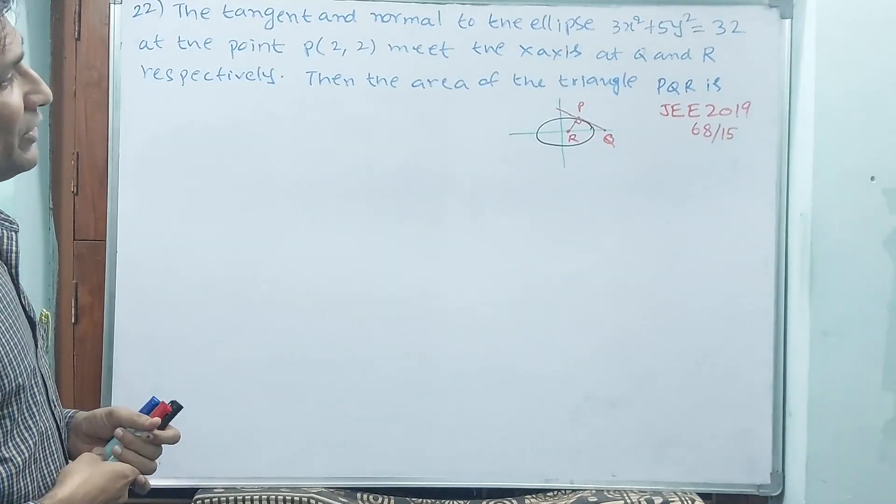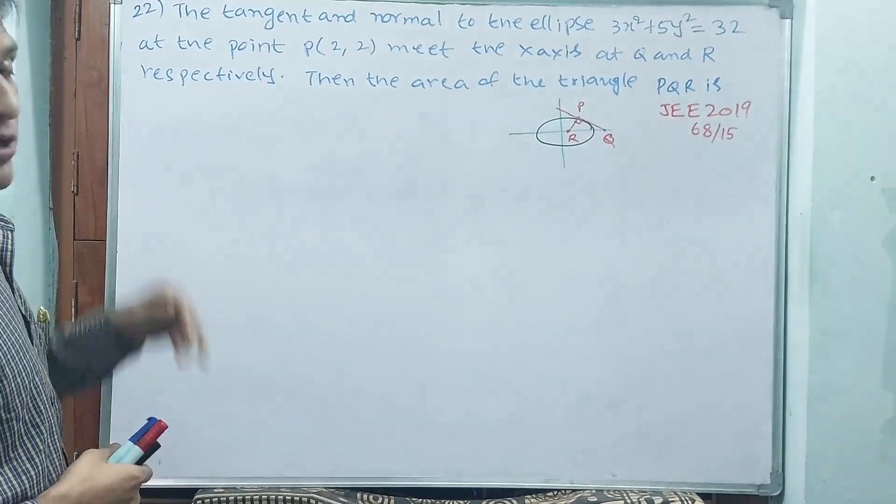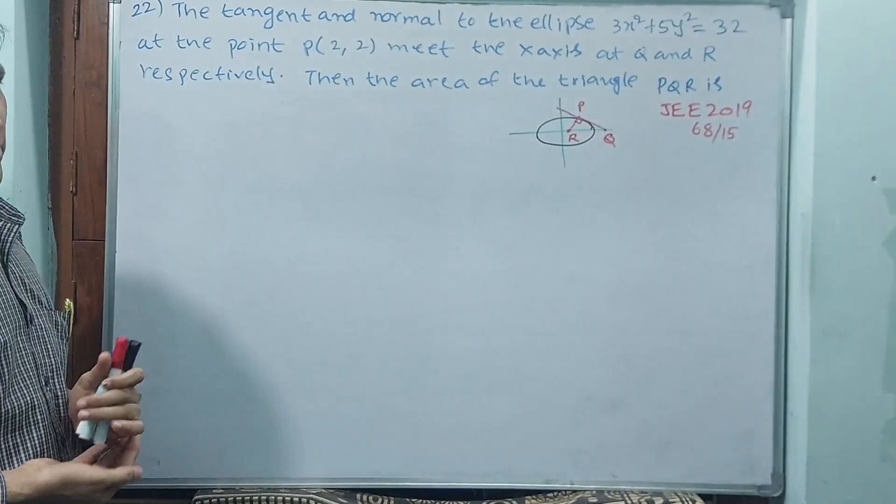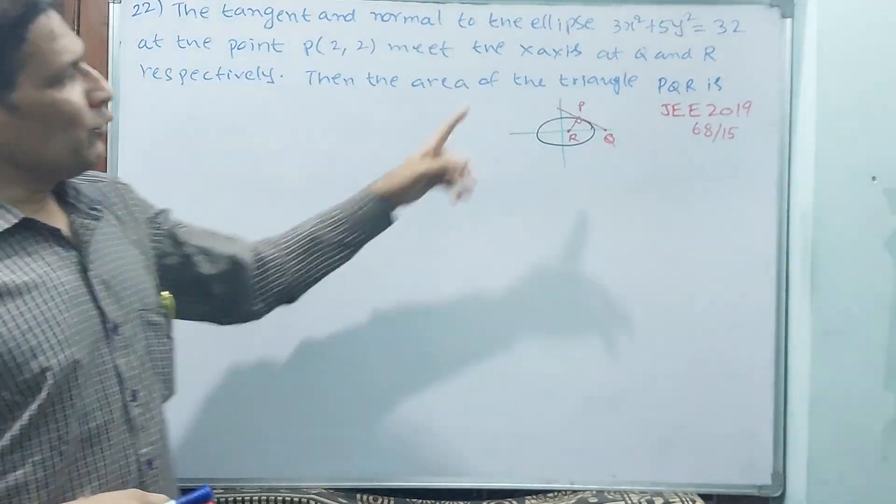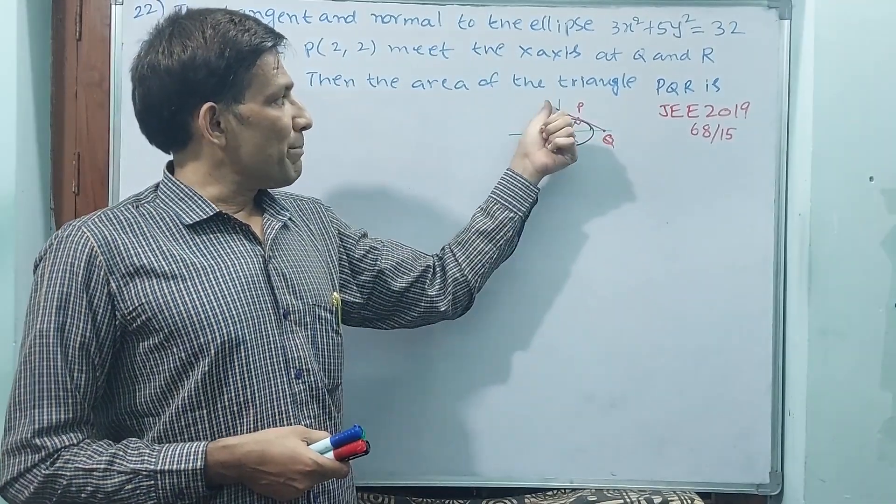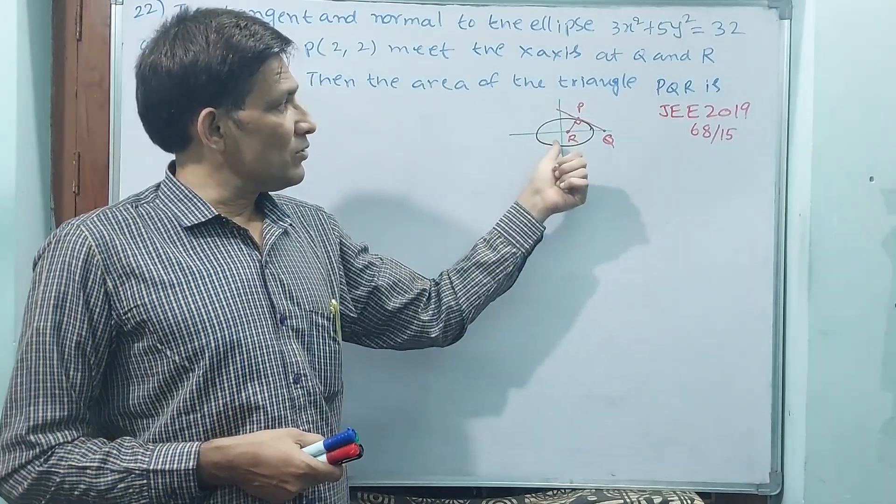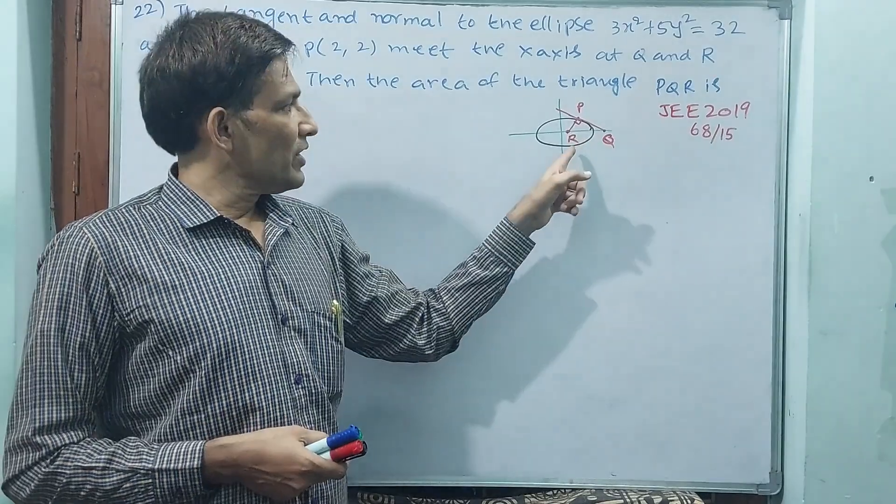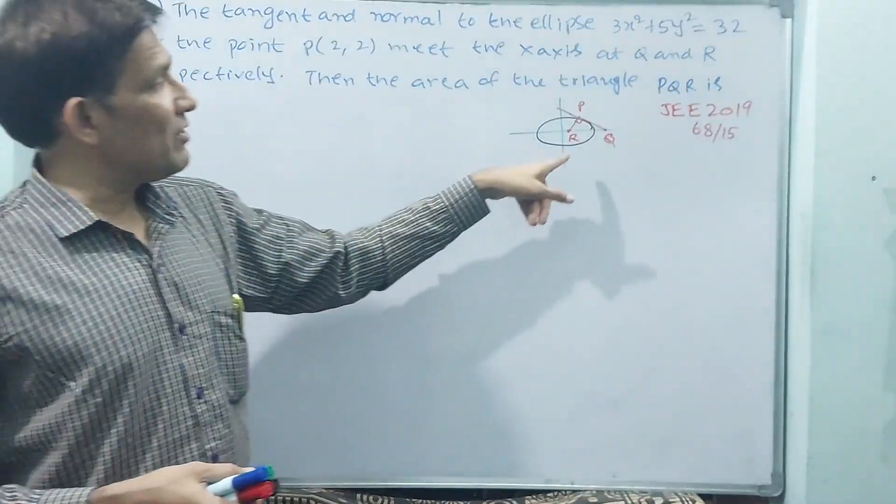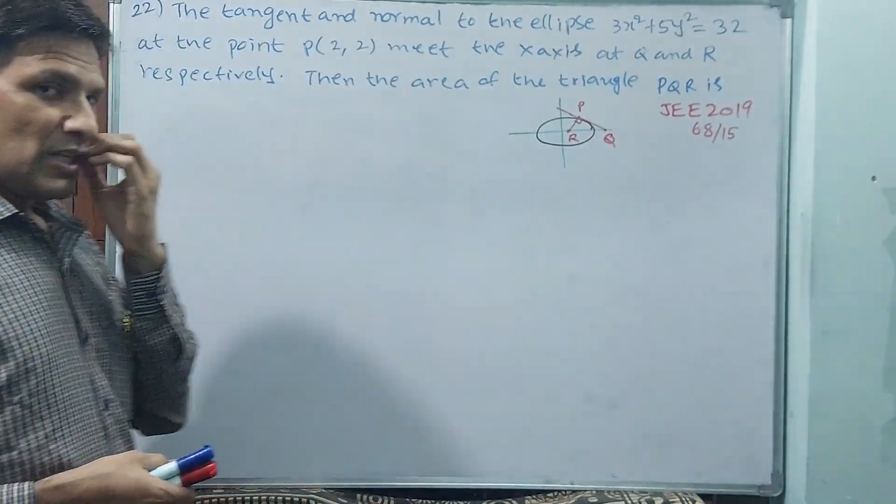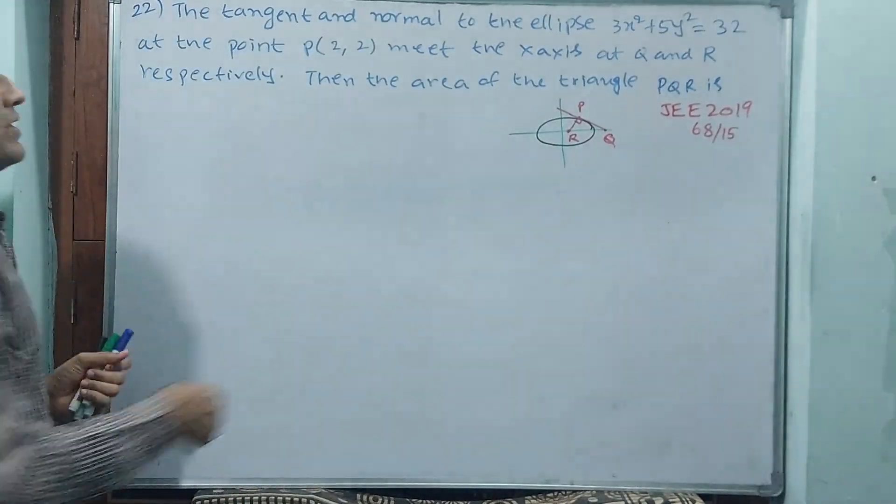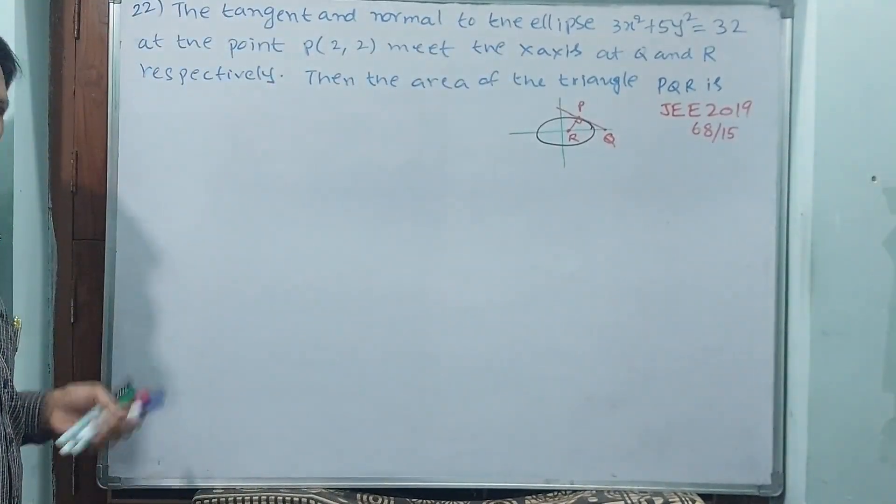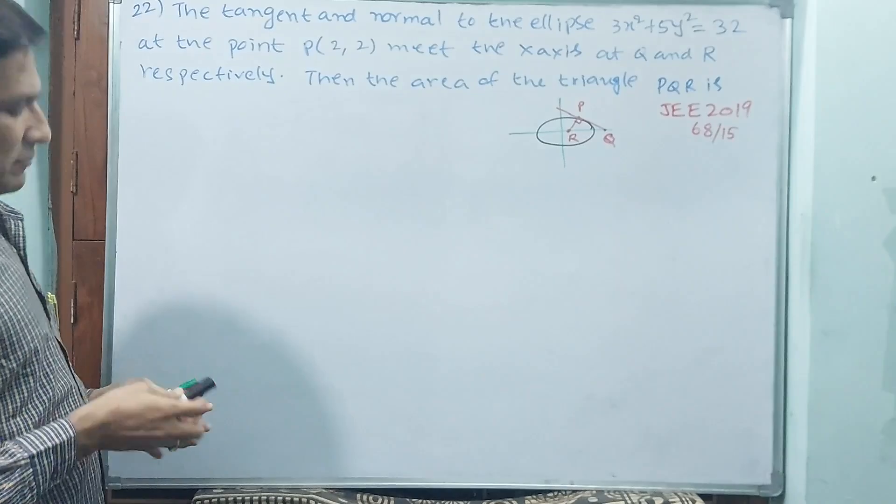Points you have to find P, Q, and R. But point, means how you are going to get P? They have given 2,2, that is not a problem. Q and R you have to get. For getting PQ equation, you find tangent equation. Submit in that equation y is equal to 0, then that point will come. Y is 0 only will come. R also, normal equation you are going to get, again y equal to 0 is to submit, then that point also. That means P will be 2,2, but here both points are y coordinates are 0. Then you can find area.